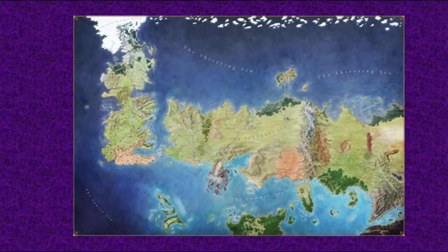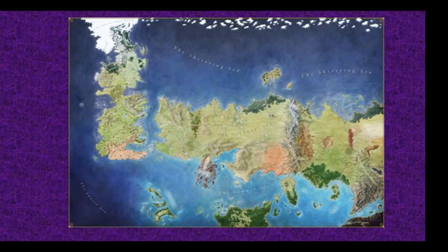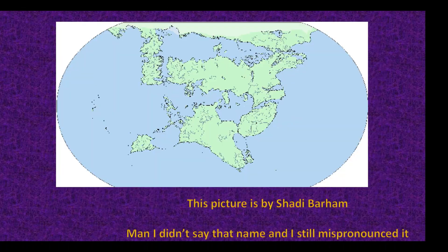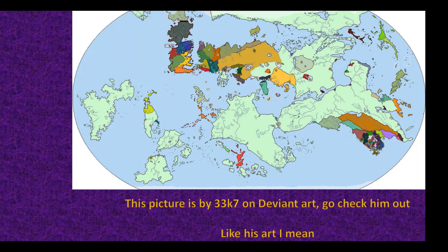Hey guys, Captain Time here. When people think of the biggest mysteries of Westeros, a question that everyone thinks about but rarely discusses is the true size of the world. While we can use various tactics to conclude the approximate size of Westeros and other areas of interest, there does not seem to be a way to find the actual size of all of Planetos. However, I do believe there is a way to roughly estimate the size and radius of Planetos.